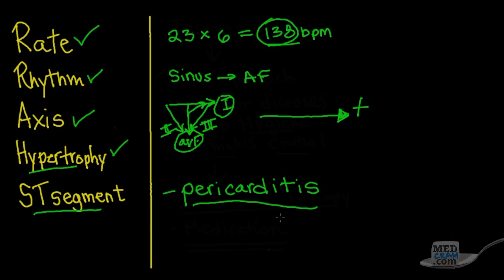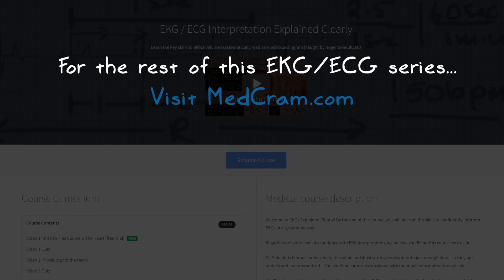So what we've got here is pericarditis, with a heart rate of 138, sinus slash atrial fibrillation, mild left axis deviation, and no signs of hypertrophy. Join us for more EKGs — because practice makes perfect. Thanks for joining us.